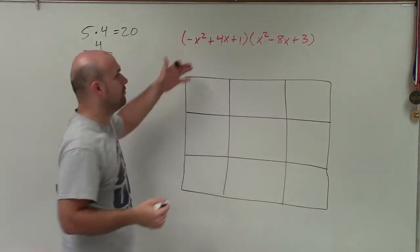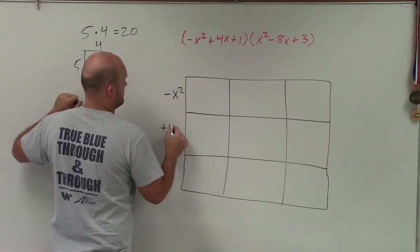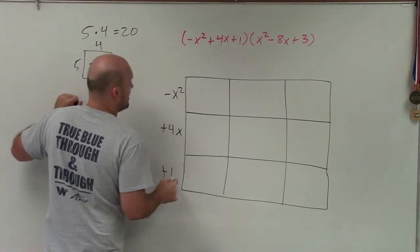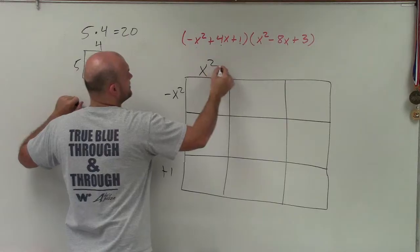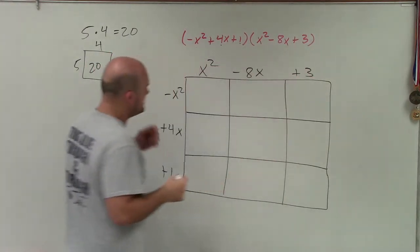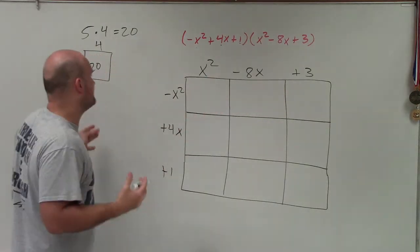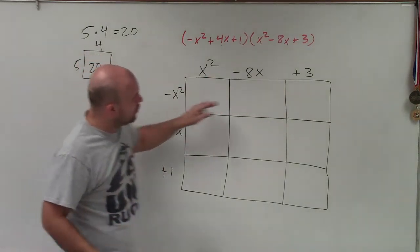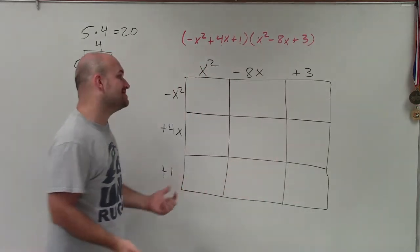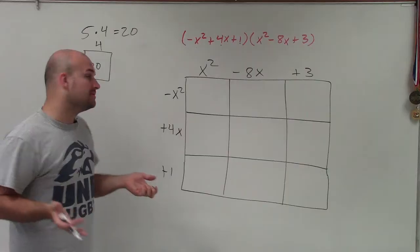Then all I'm simply going to do is take one polynomial and write it on one side, and then take the other polynomial and write it on the other side. So now what you can see is I have kind of my length and my width. So to find the product, to find this total area, what I'm going to do is simply just take the area of each one of these squares and then add it up.